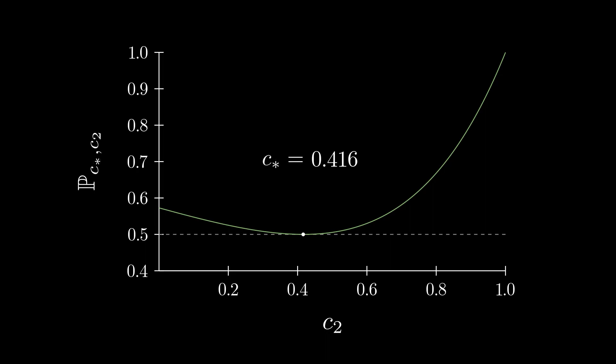If both robots run this cutoff, neither can improve their odds by deviating from it, which means that we have found our optimal strategy, or Nash equilibrium. We can formalize the Nash equilibrium by finding the cutoff that results in a minimum when both robots run it.